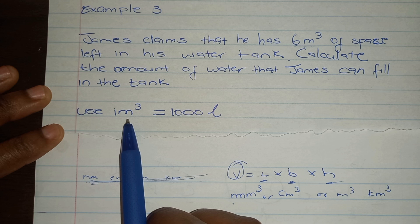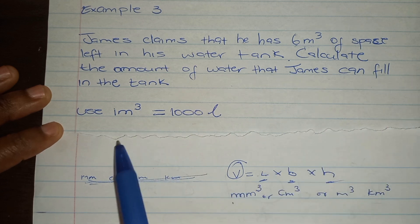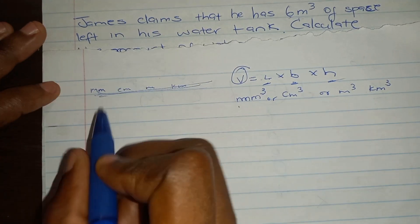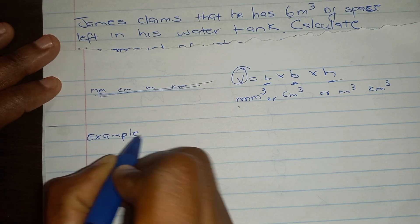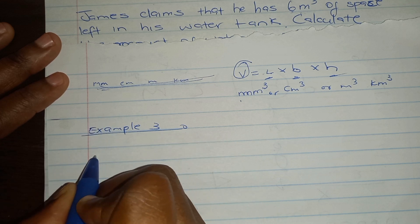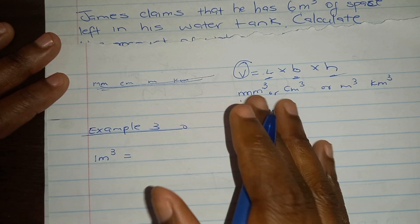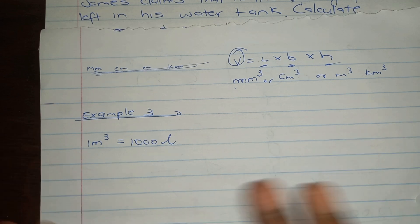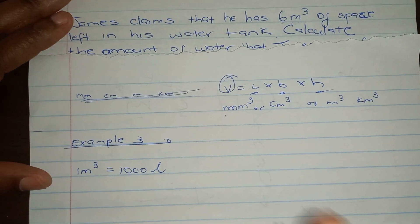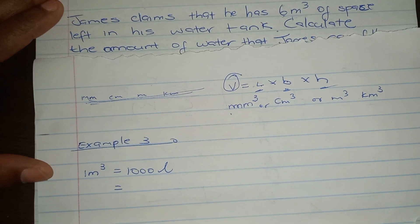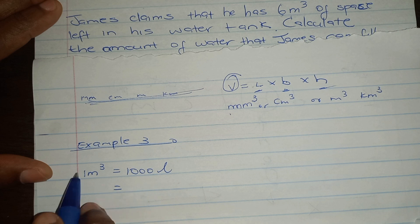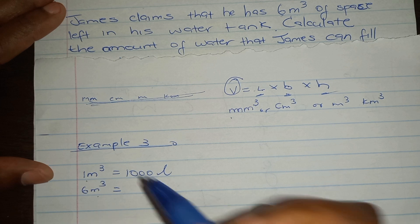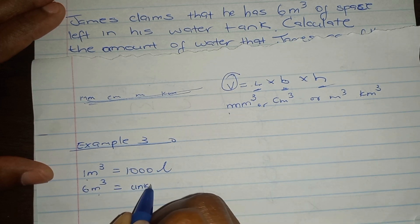Sometimes a question can give you length, breadth, and height and you have to calculate volume first, but we'll get there. Here, we're going to use the conversion factor: one cubic meter is equal to one thousand liters. I always start with 'is equal to,' then I write where I have cubic meters. You see cubic meters at the top and cubic meters at the bottom, and then the number of liters — which I do not know.